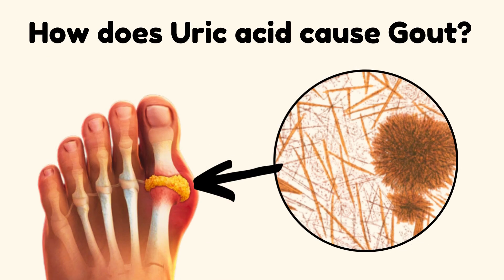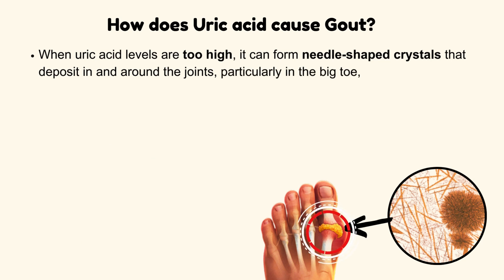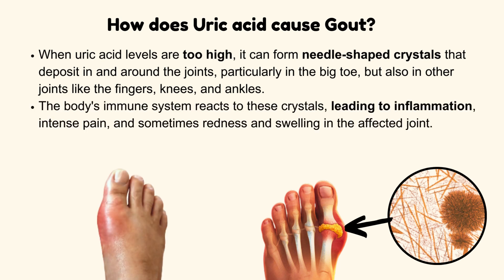How does uric acid cause gout? When uric acid levels are too high, it can form needle-shaped crystals that deposit in and around the joints, particularly in the big toe, but also in other joints like the fingers, knees, and ankles. The body's immune system reacts to these crystals, leading to inflammation, intense pain, and sometimes redness and swelling in the affected joint.